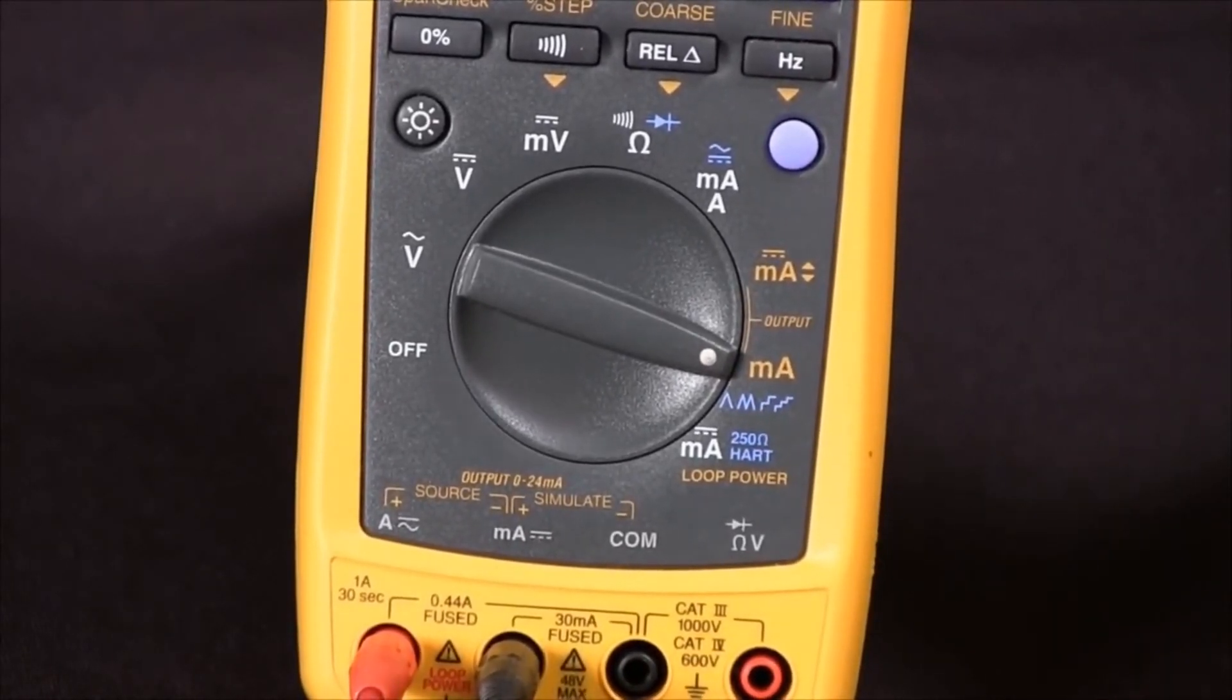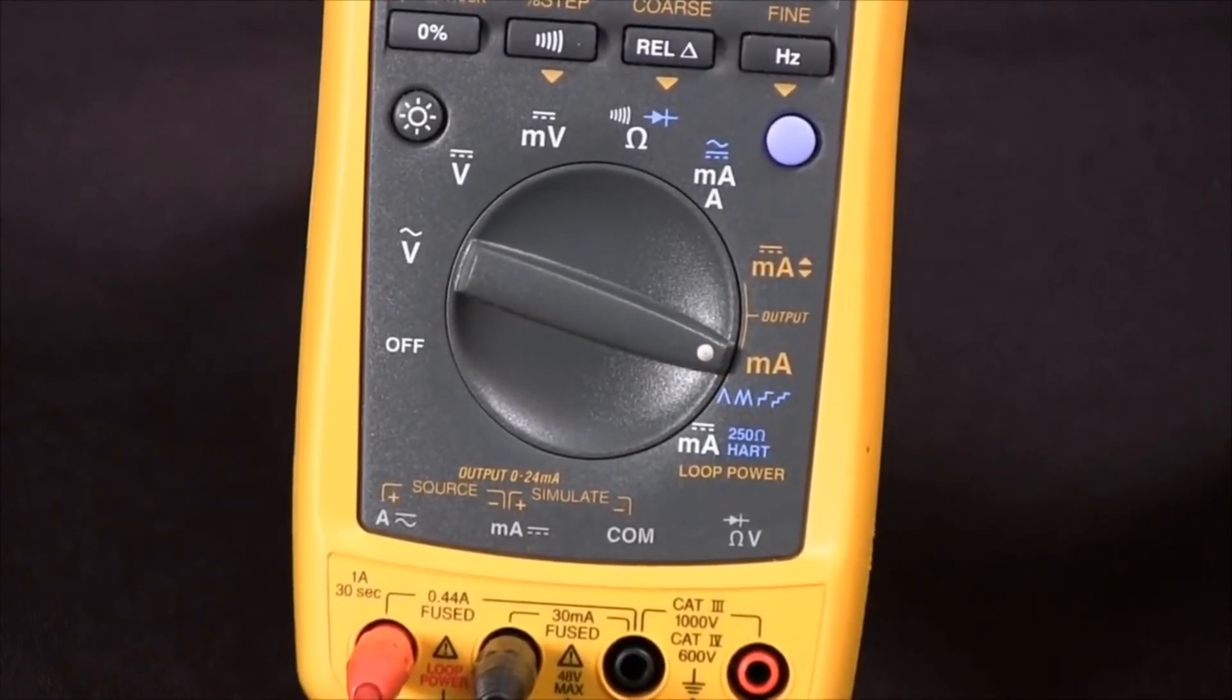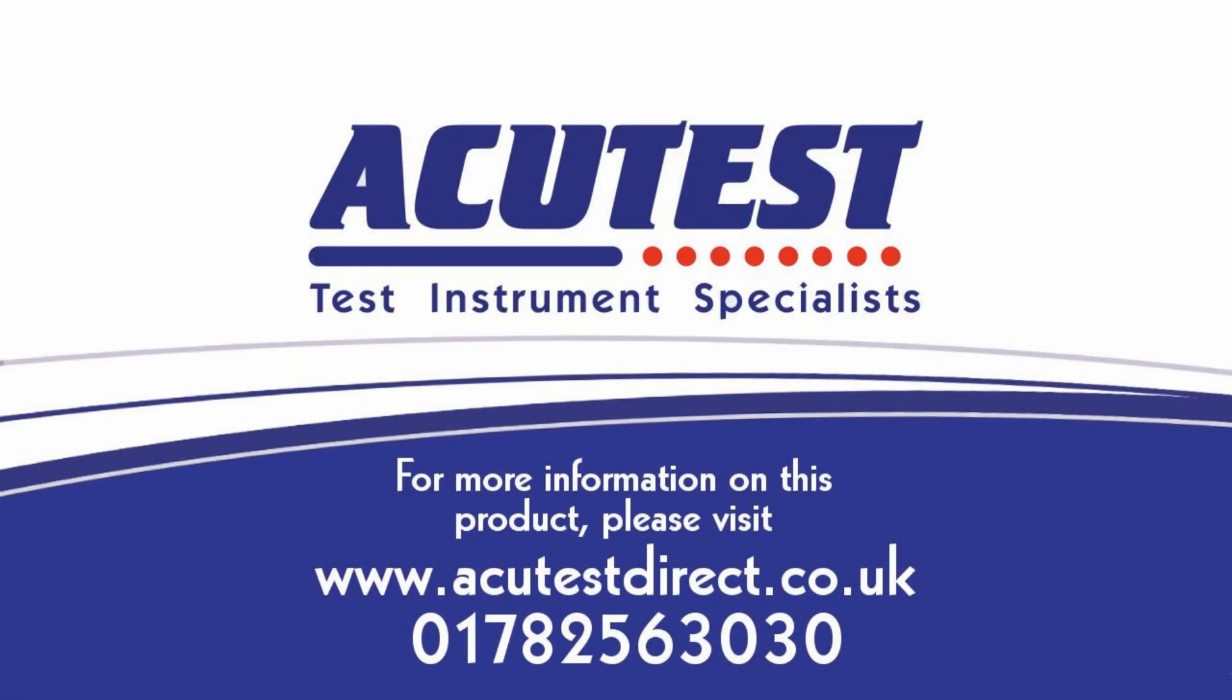And that's how we source 4 to 20 milliamps DC with our 789 process meter.